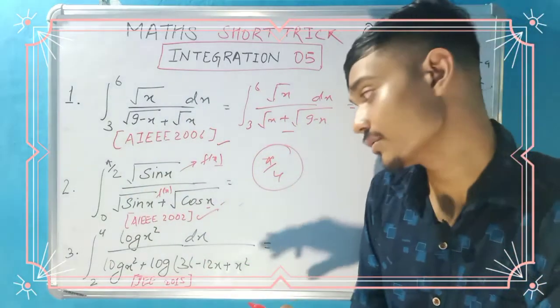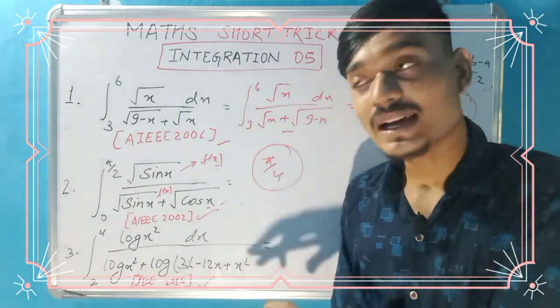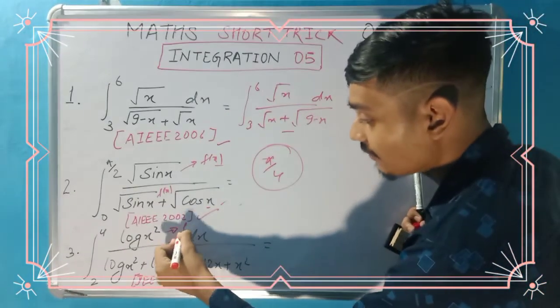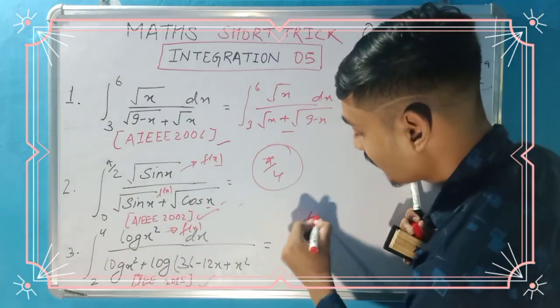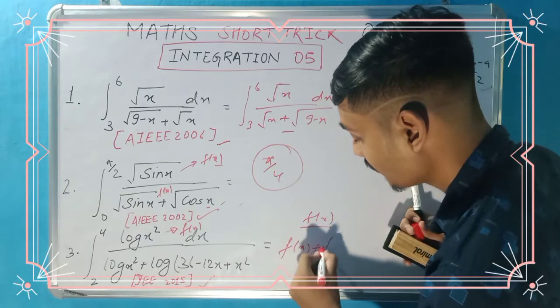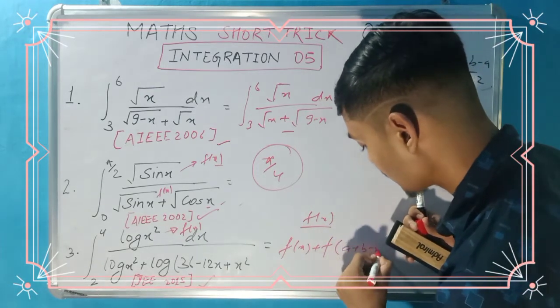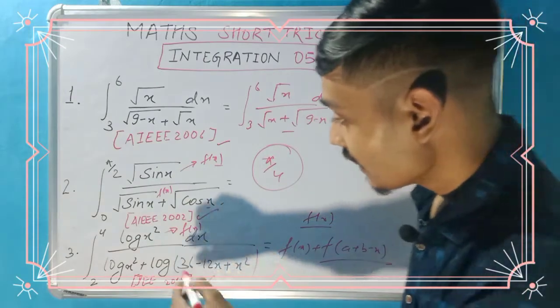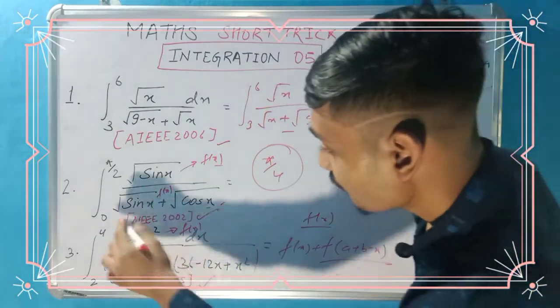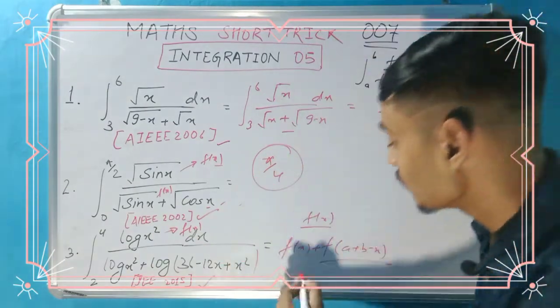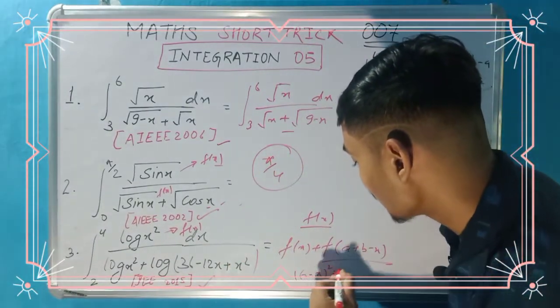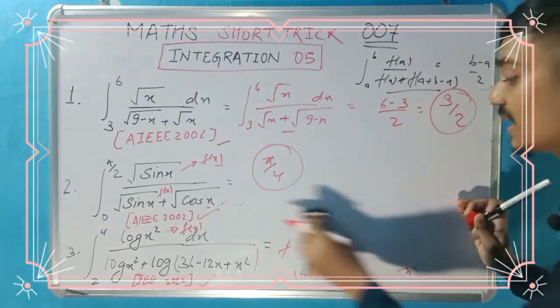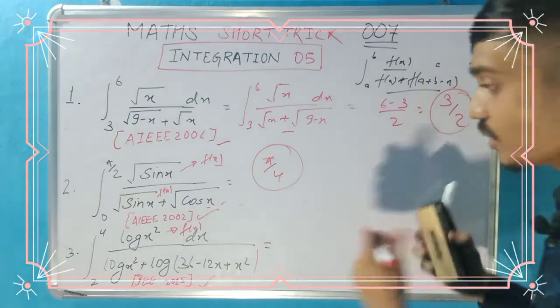See this is the third question, and this is the most important question. This is also the latest question—JEE 2015 asked this question. Here it has been combined with log of x square. If f(x) divided by f(x) plus f(a+b-x) is here, simple answer is (b-a)/2. x square, 4 plus 2 is 6 minus x, so (6-x) whole square, that is 36 minus 12x plus x square. That is 1.